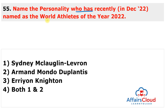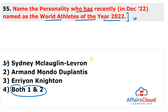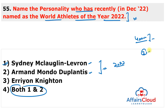Question 55: Who were named World Athletes of the Year 2022? The answers are Sydney McLaughlin-Levrone and Armand Mondo Duplantis. American hurdler Sydney McLaughlin-Levrone, the 2022 world champion, and Swedish pole vaulter Armand Mondo Duplantis, the current Olympic and world champion, were named World Athletes of the Year 2022. McLaughlin-Levrone broke the women's 400m hurdles world record twice in 2022, and Duplantis set three new world records.